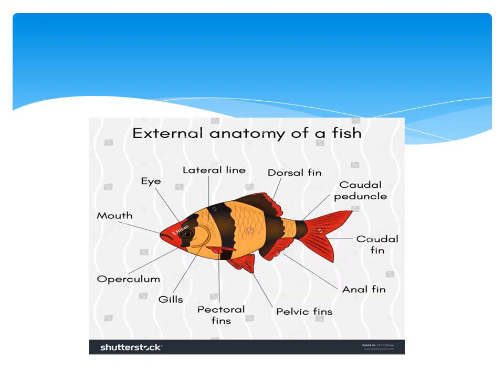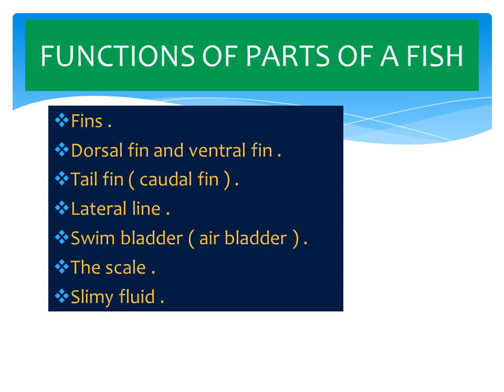Let us have a look at the external anatomy of a fish. Features include the mouth, eye, lateral line, dorsal fin, caudal fin, anal fin, pelvic fins, pectoral fins, scales, and lastly the operculum.